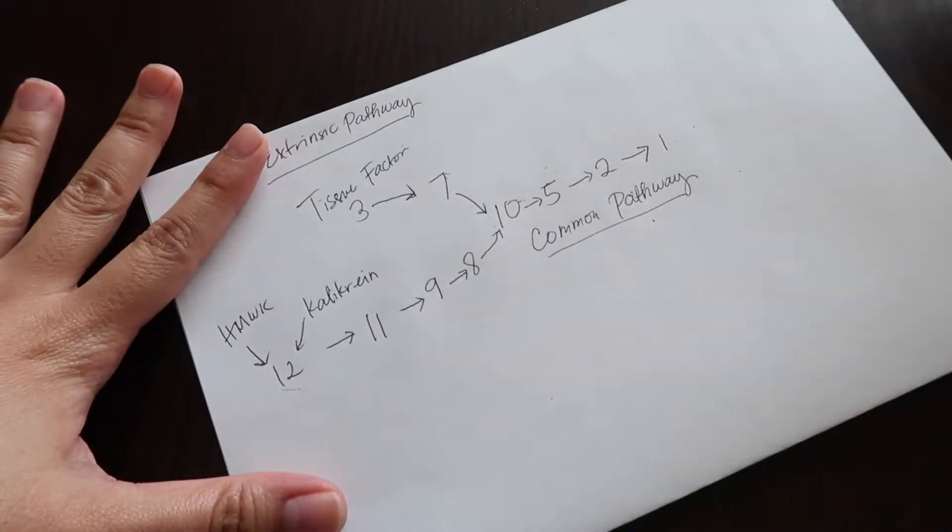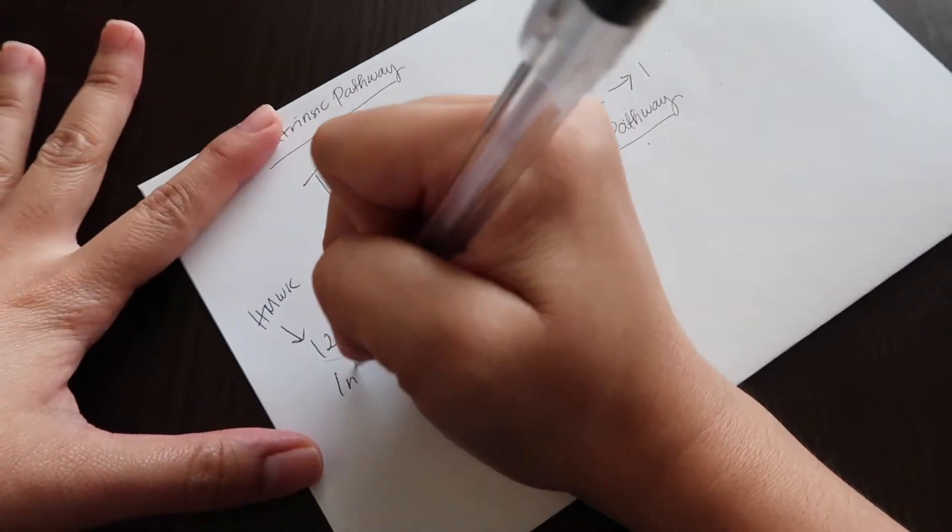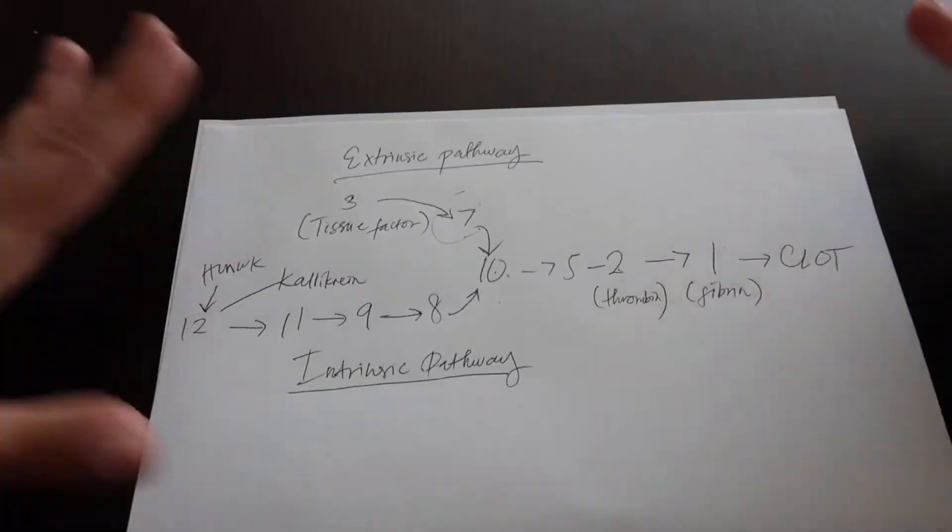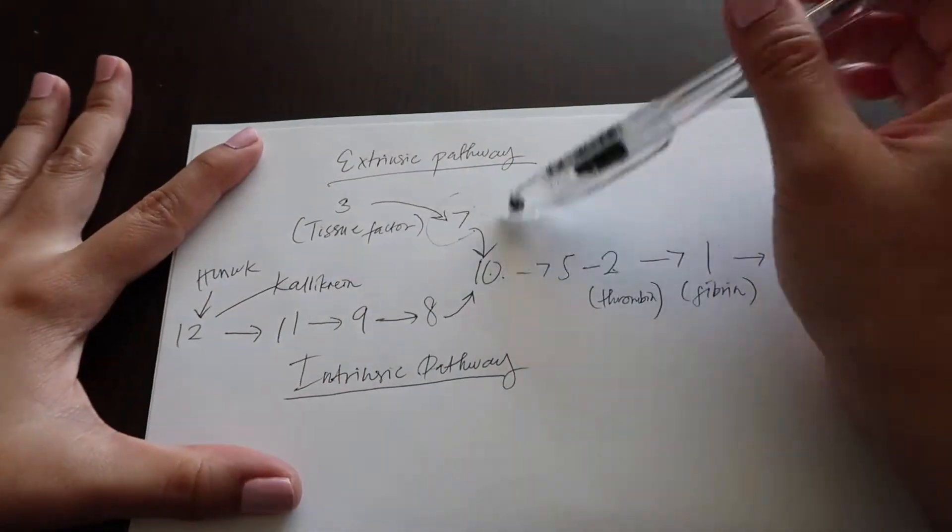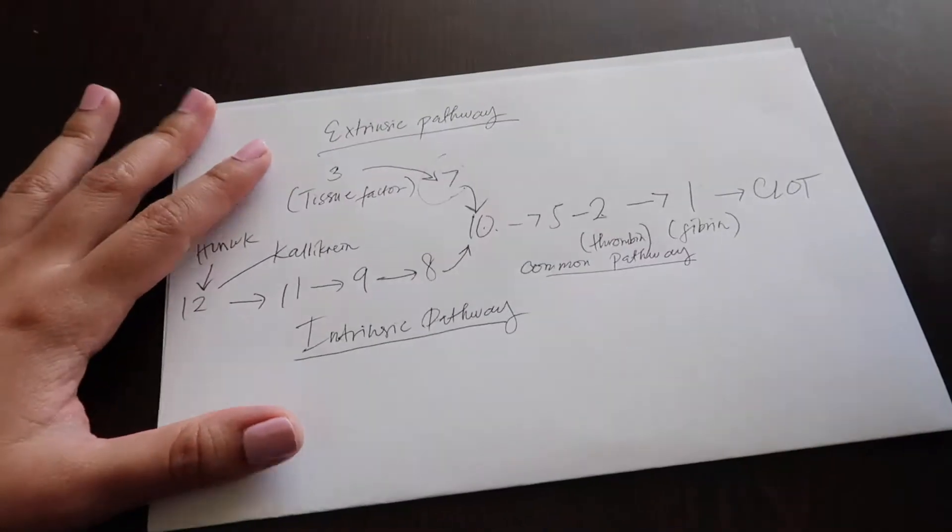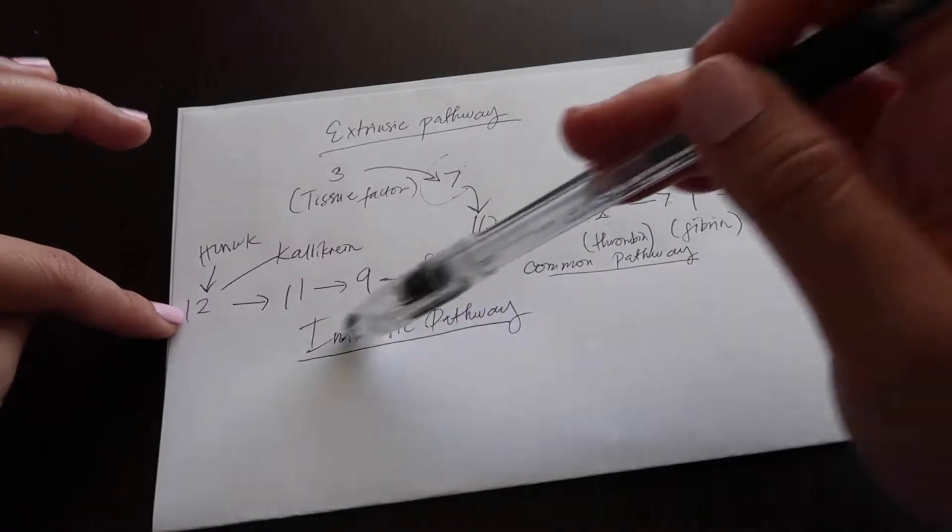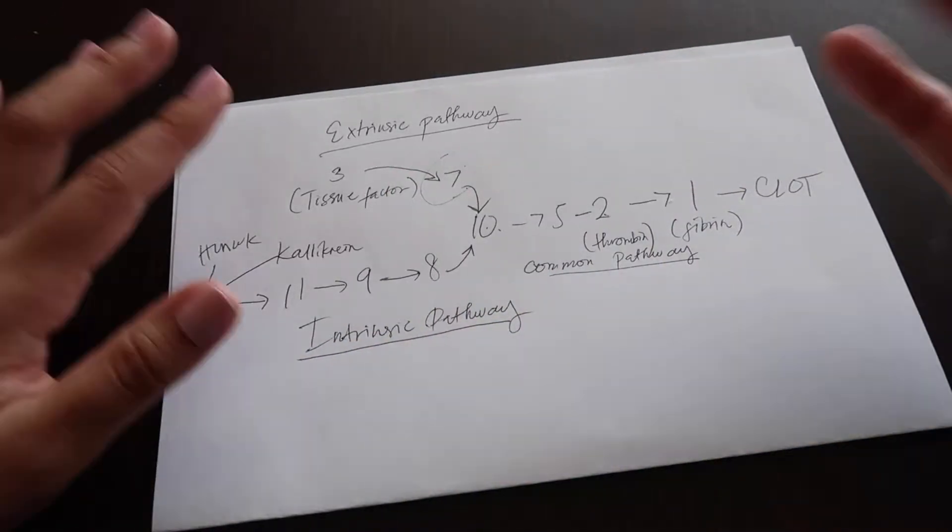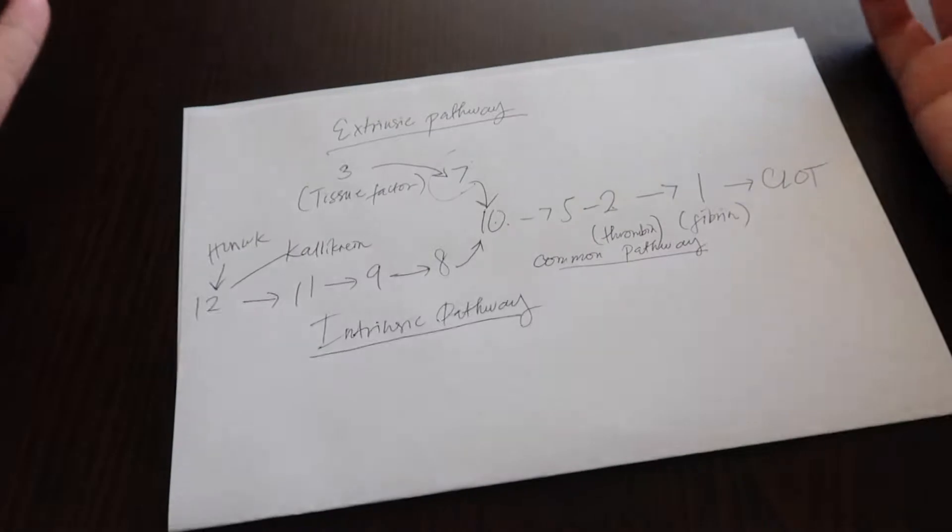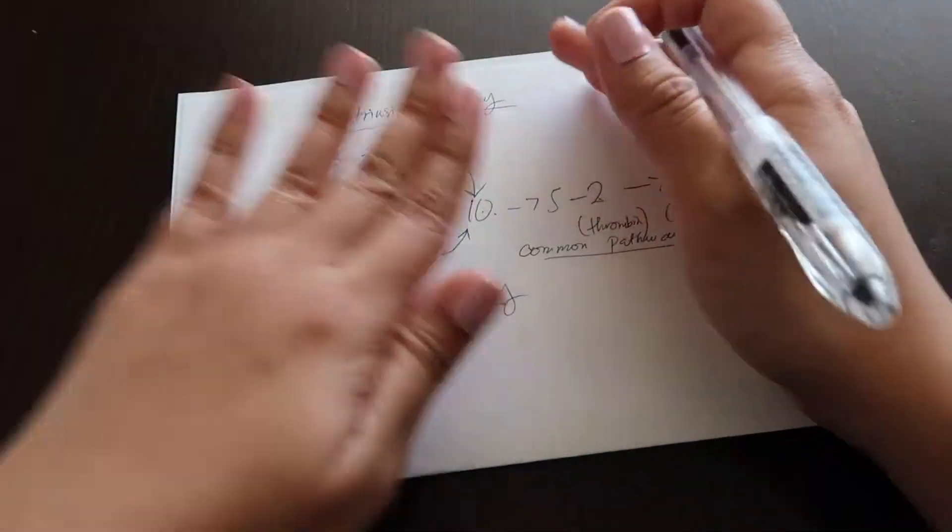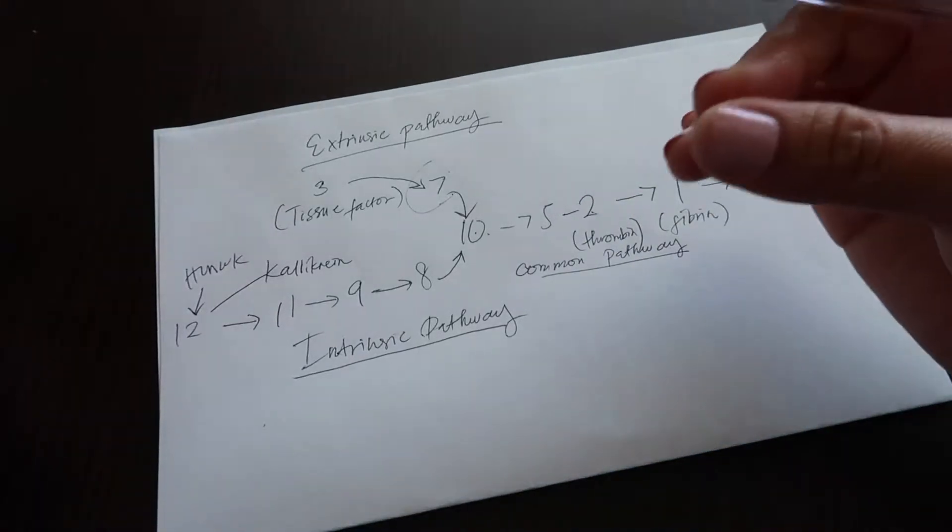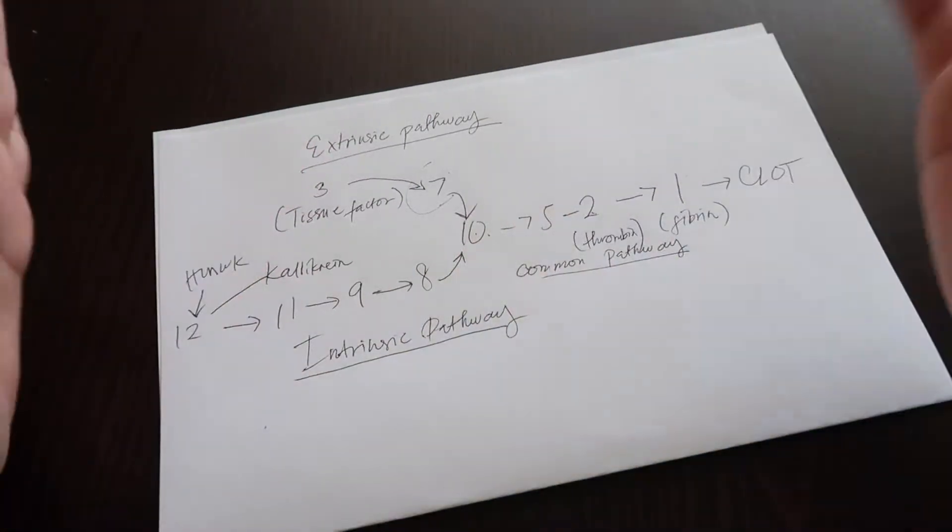So now you have the coagulation cascade, that was pretty straightforward. You have the extrinsic pathway, the common pathway, and you have the intrinsic pathway which has all these other factors. So now it's easy to memorize this. When you have the exam, you just write 10, 5, 2, 1, put 7 up here, and then 8, 9, 11, 12, done. But the exams are not that easy. They're more like which pathway is going wrong, which factor is going wrong, or what is going on with the patient, why are his labs abnormal.